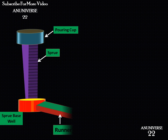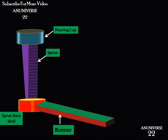The next part is the runner. It is generally located in the horizontal plane or parting plane and connects the sprue to the in-gates. A runner extension is provided to trap slag in the molten metal.